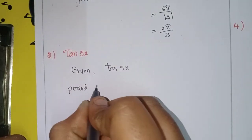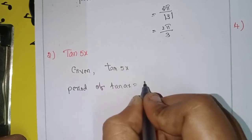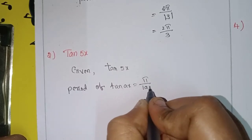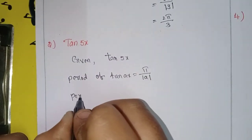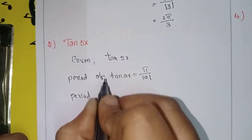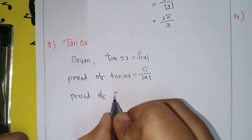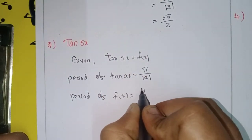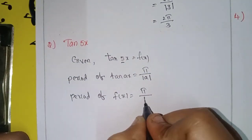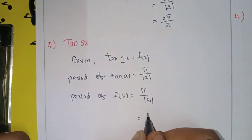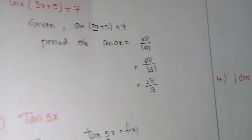Next given function: tan(5x). The period of tan(ax) formula is π by modulus of a. So the period of this function f(x) is π divided by modulus of 5, that means π/5.